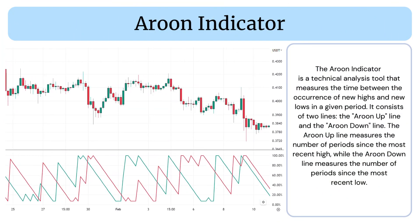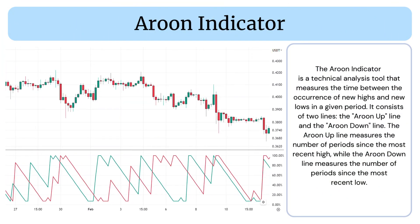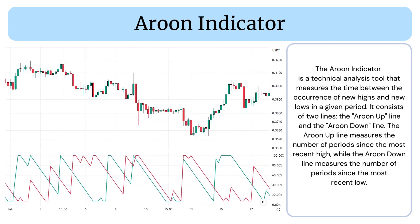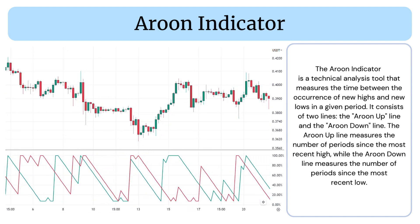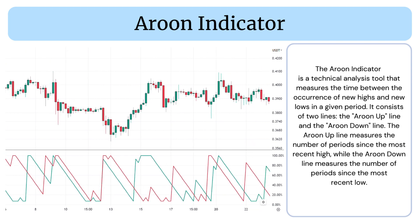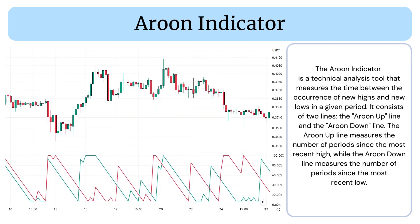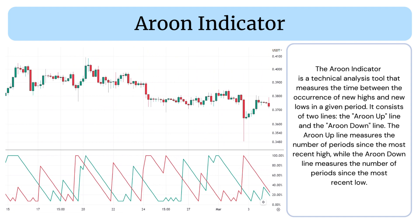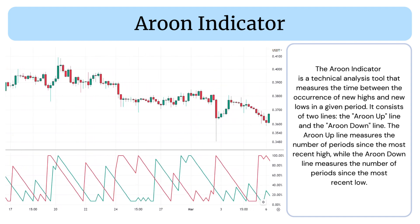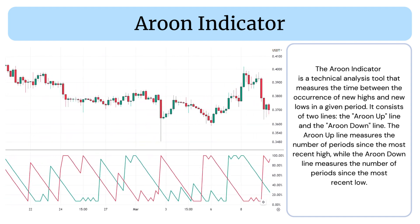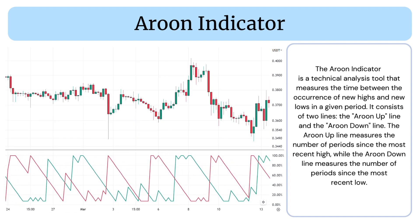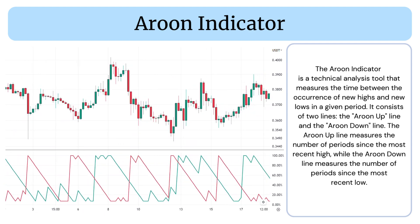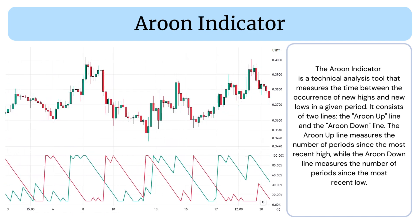The Aroon Indicator is a technical analysis tool that measures the time between the occurrence of new highs and new lows in a given period. It consists of two lines: the Aroon Up line and the Aroon Down line. The Aroon Up line measures the number of periods since the most recent high, while the Aroon Down line measures the number of periods since the most recent low.